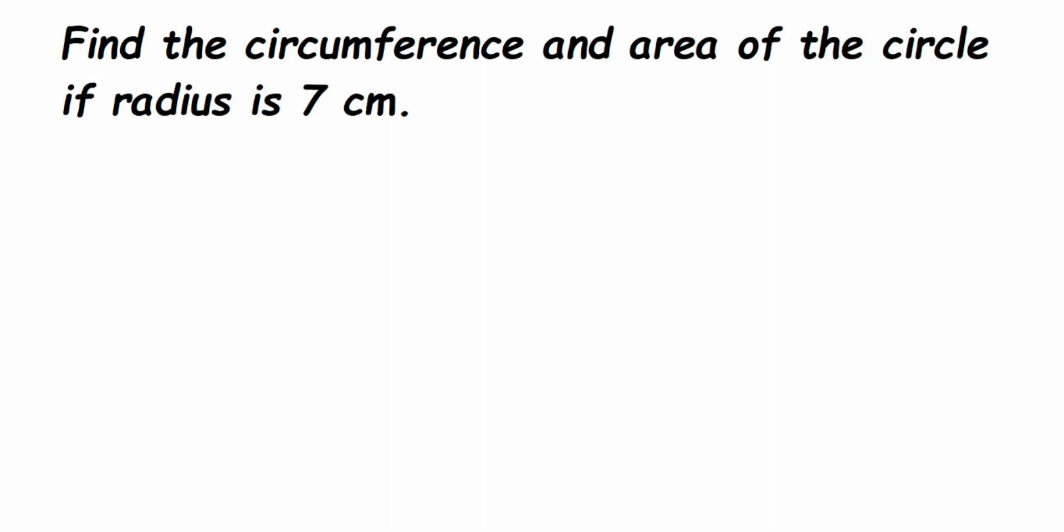Hey everyone, so here is a question on perimeter and area. It's a very simple question that can come for two marks. The question is: find the circumference and area of the circle if radius is 7 centimeters. So they have given radius which is 7 centimeters. We have to find out two things - one is circumference and second is area.